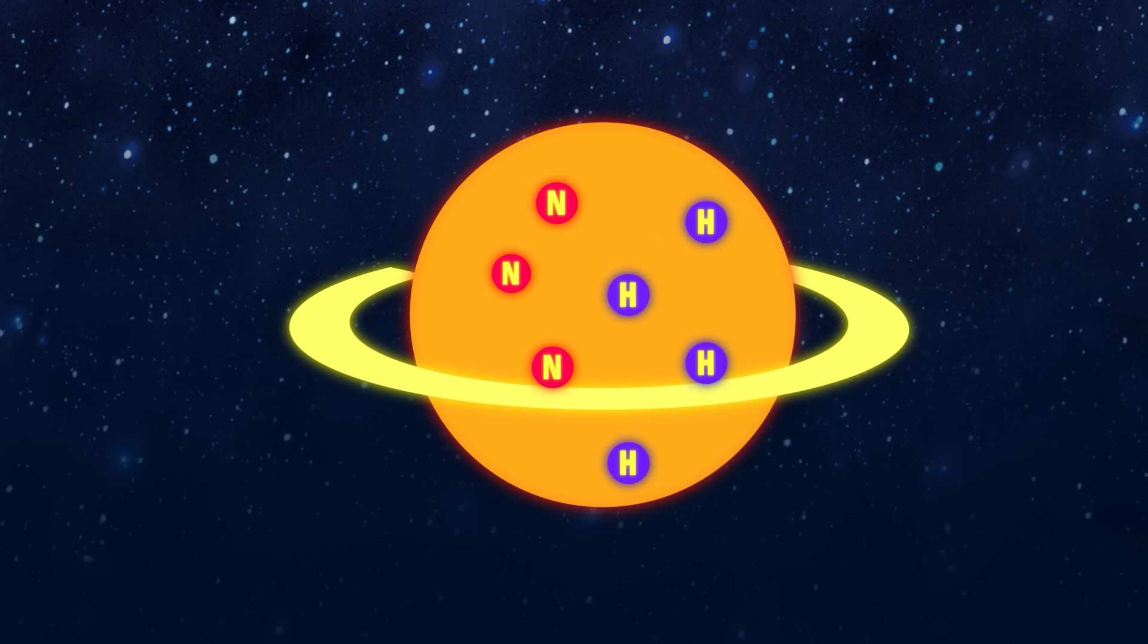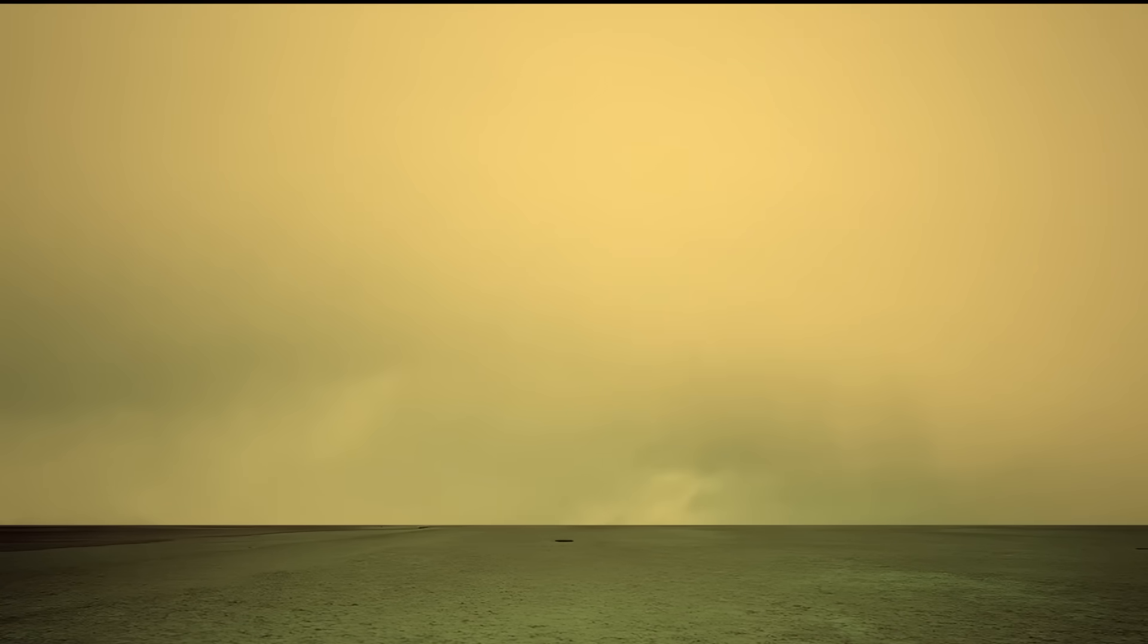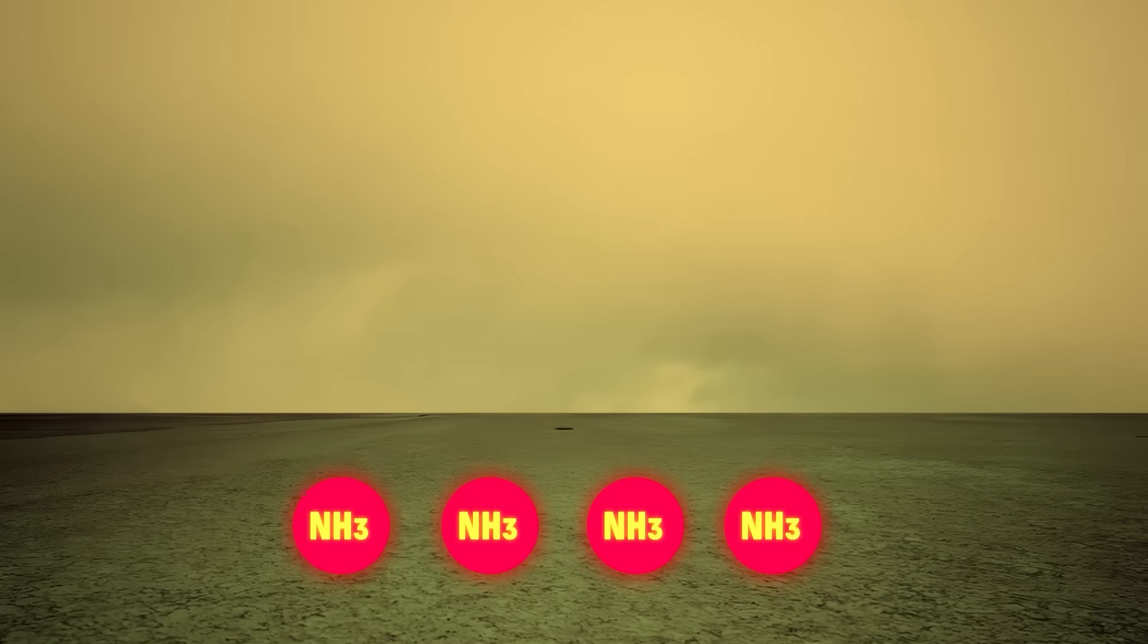So any ammonia on the surface of Titan would have evaporated and helped to create the nitrogen-rich atmosphere, and any ammonia below the surface would have combined with water ice and allowed it to melt into various liquid forms.